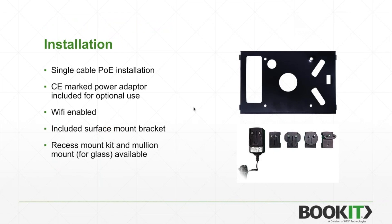Installation is simple — a single cable POE installation. We include an international power adapter if POE is not available, and the device is Wi-Fi enabled. We include our surface mount bracket and also have a recess mount kit and a mullion mount for glass available. The mullion mount attaches to the glass mullion, you run cables through it, and the panel floats over the glass with no messy cables to dress.